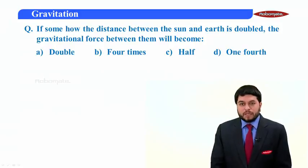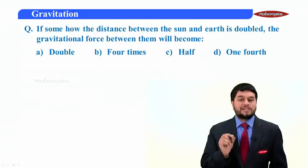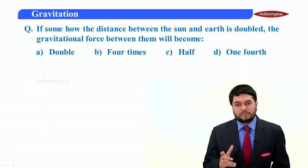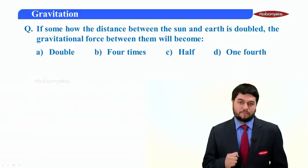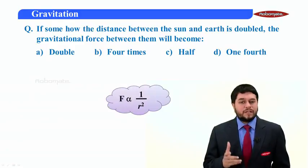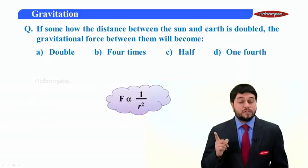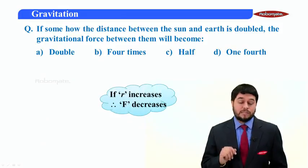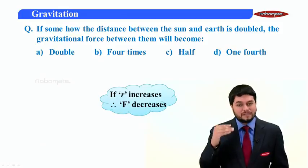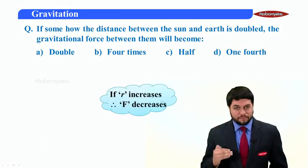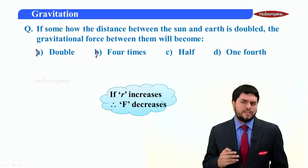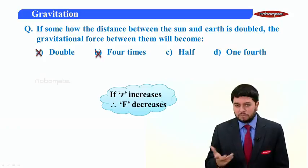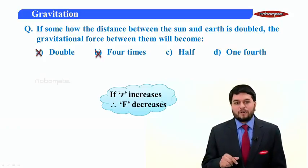Let's see one more question. If somehow the distance between the sun and earth is doubled, then the gravitational force between them will become what? Now, you know, gravitational force is inversely proportional to the square of the distance between the two material bodies. And inversely proportional means if R increases, force F will decrease. So, force will decrease means A option and B option cannot be the answer because that says doubling and four times not possible. So, either it is half or one fourth.